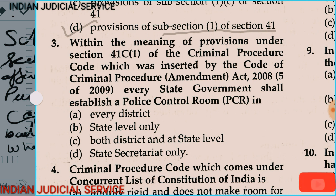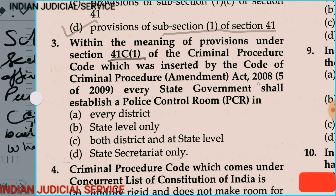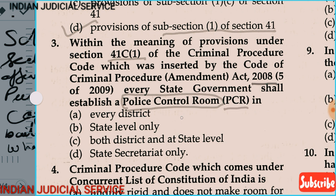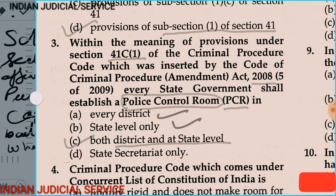Question 3: Within the meaning of the provision under Section 41C of the Code of Criminal Procedure, inserted by the CrPC Amendment Act 2008, every state shall establish a Police Control Room (PCR). The answer is option C — both district and state level. Section 41C, subsection 1 provides that the Police Control Room is established by the state government at every state level and at every district level.